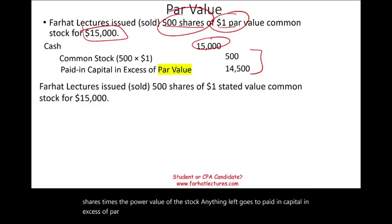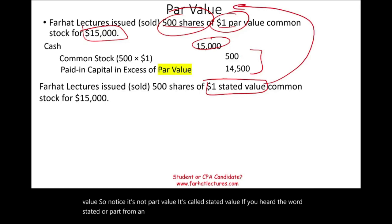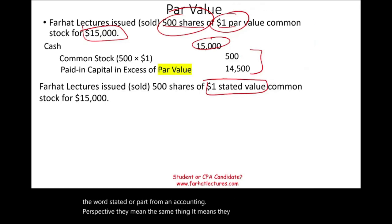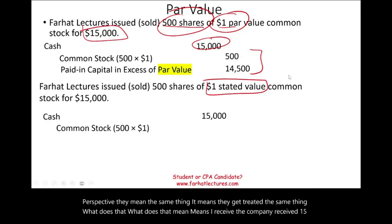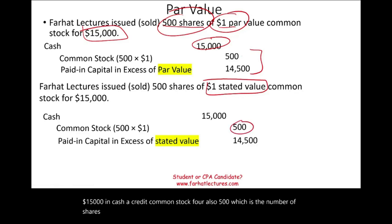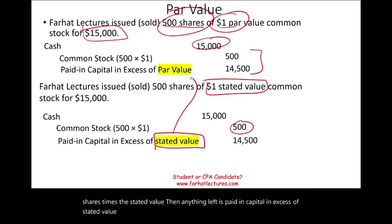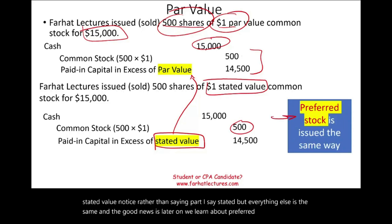Now assume Farhat Lectures issued 500 shares of $1 stated value stock for $15,000. Notice it says stated value, not par value. From an accounting perspective, stated value and par value mean the same thing — they are treated identically. Debit cash $15,000, credit common stock 500 × $1 = $500, and anything left is paid-in capital in excess of stated value: $14,500.